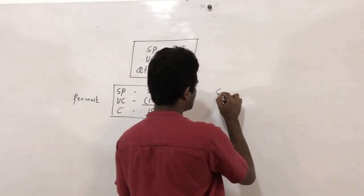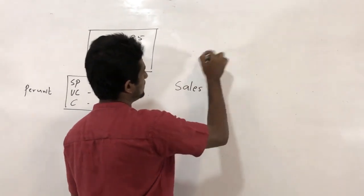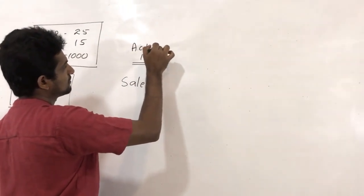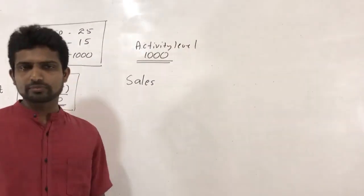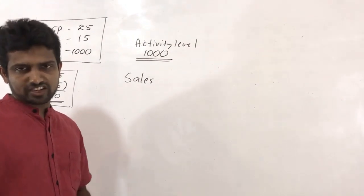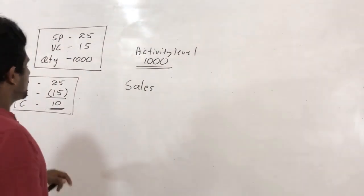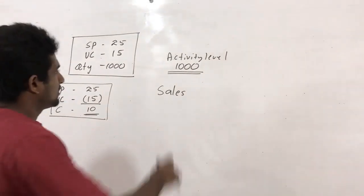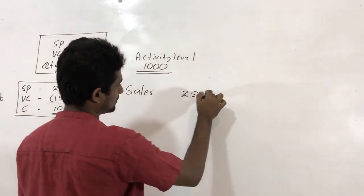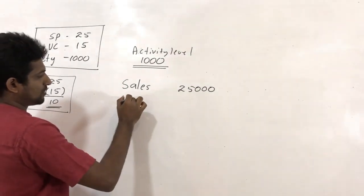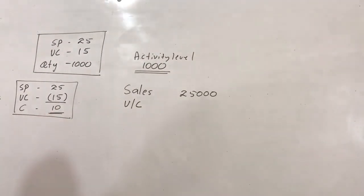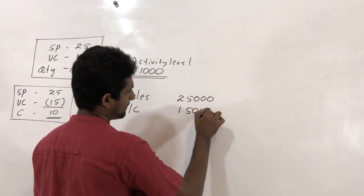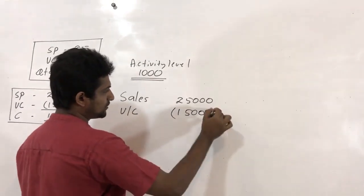If we calculate for 1,000 units — at an activity level of 1,000 units — when you sell 1 unit the sales is 25, so for 1,000 units sales is 1,000 × 25 = 25,000. The variable cost to manufacture 1 unit is 15, so for 1,000 units the variable cost is 15,000. Therefore, 25,000 minus 15,000 gives the contribution.